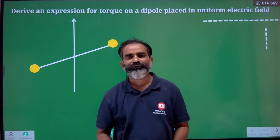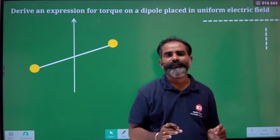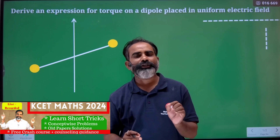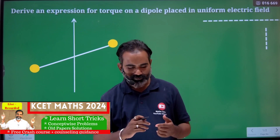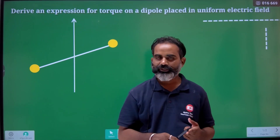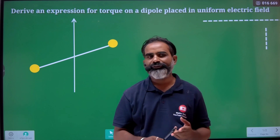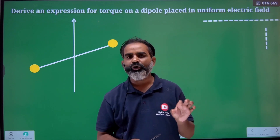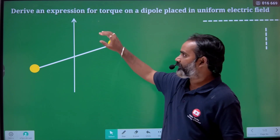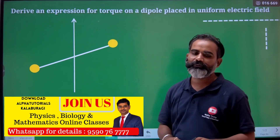Hi, good evening dear students. In the first chapter, three marks are important. The derivation of the three marks considered are: properties of electric charge, properties of electric field. Commonly we get this question and we expect three marks to be expected.